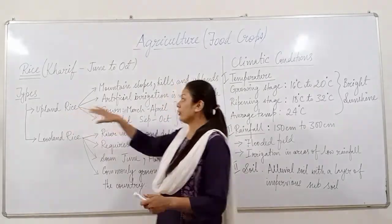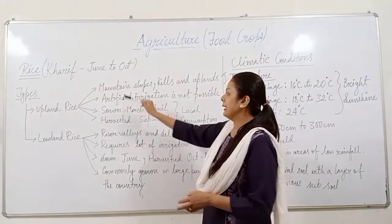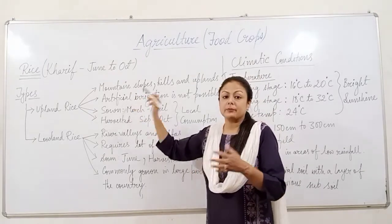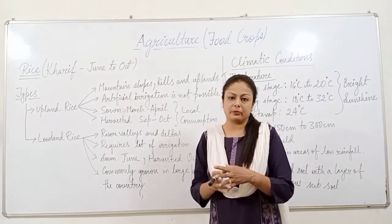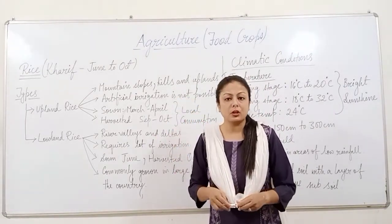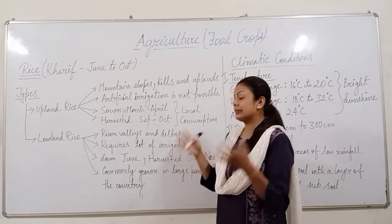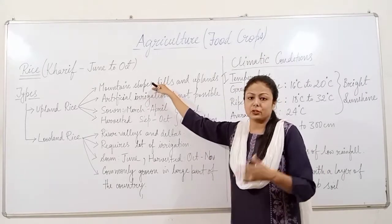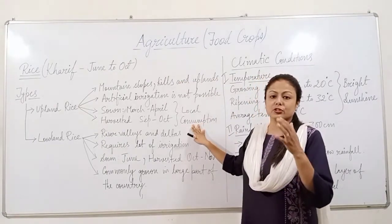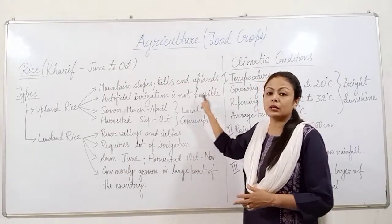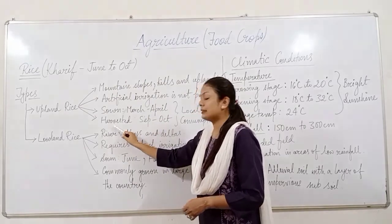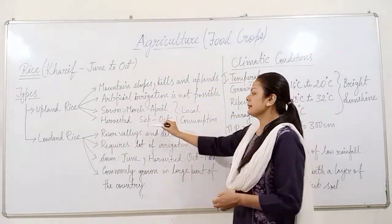Upland rice grows in higher altitude areas and is mostly used for local consumption. The sowing season is March–April and the harvesting season is September–October.